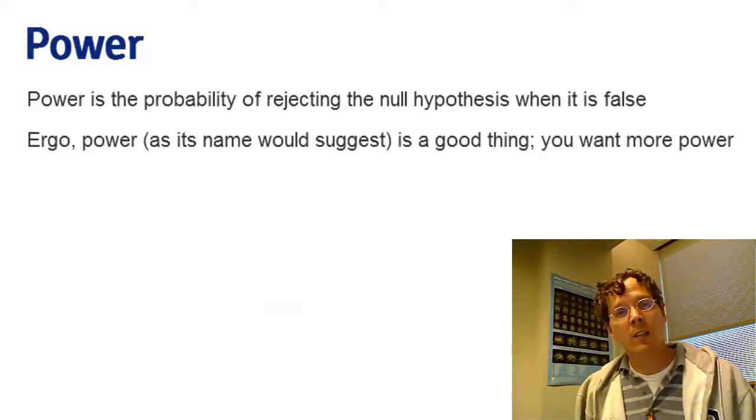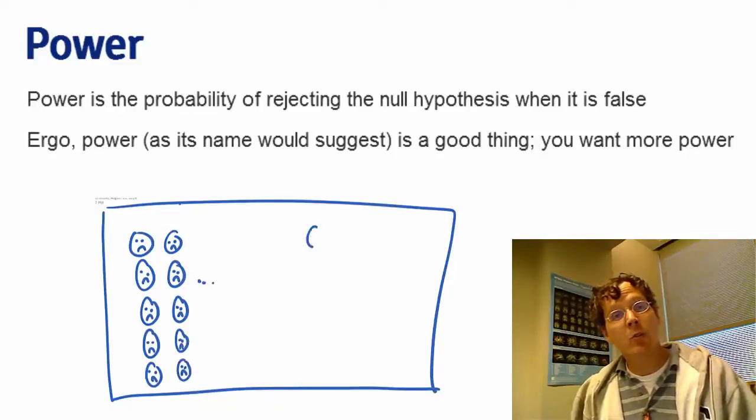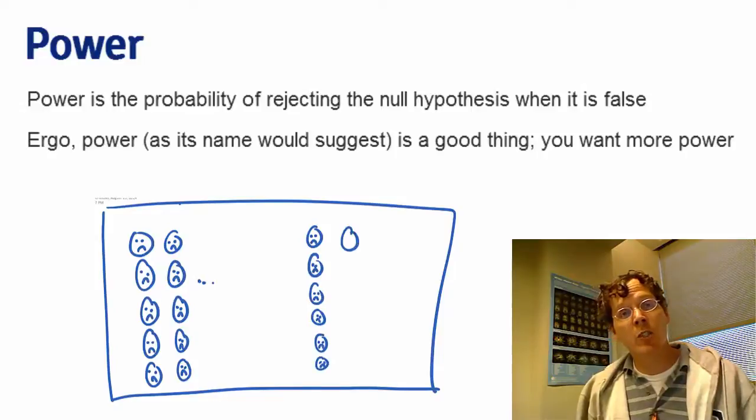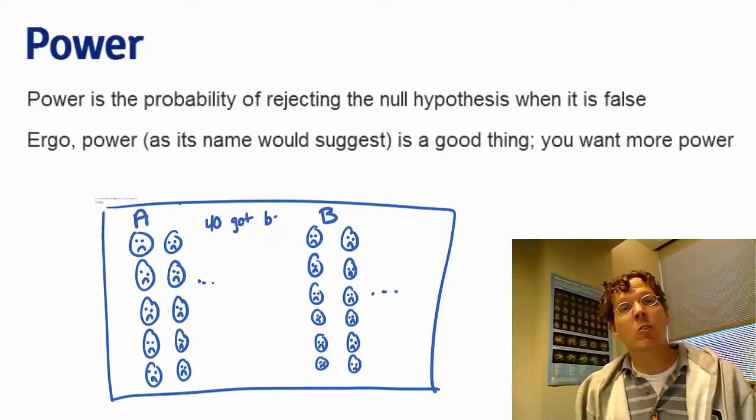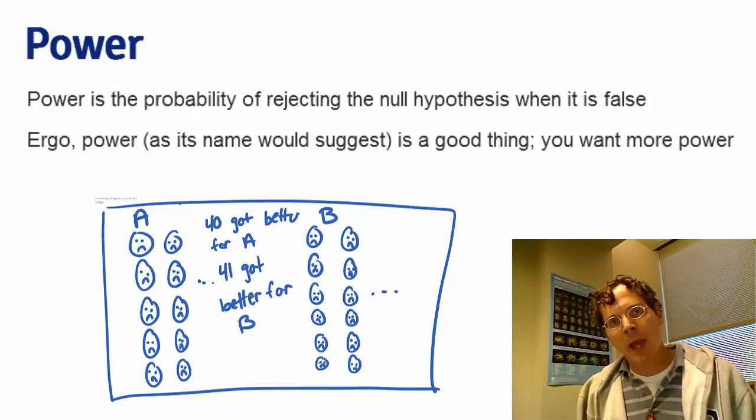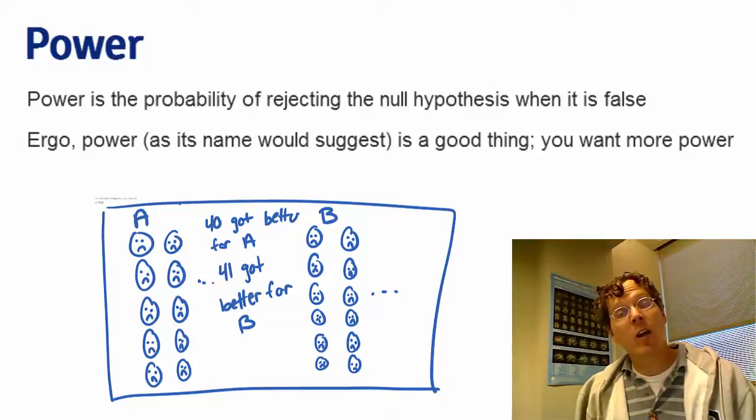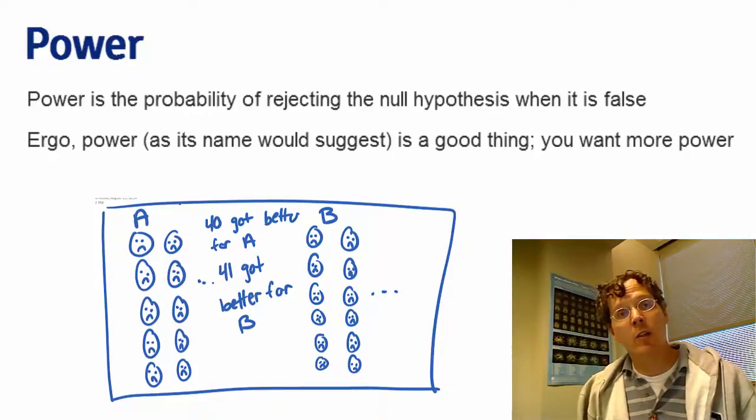On the other hand, if you had 300 people in treatment A and 300 people in treatment B and you failed to reject, then that would be meaningful because you would expect to see a difference since you collected so much data. And that's why power actually tends to come more into play for null results than it does for non-null results.